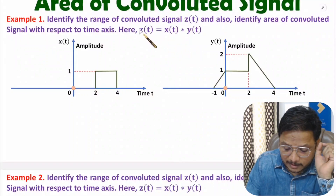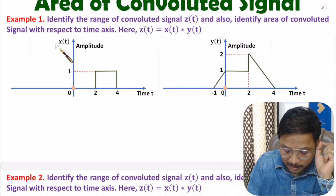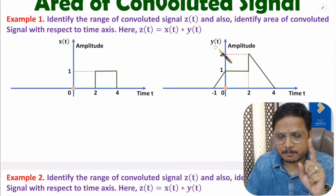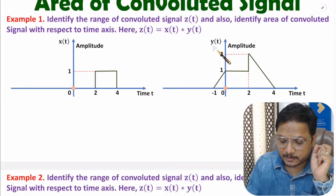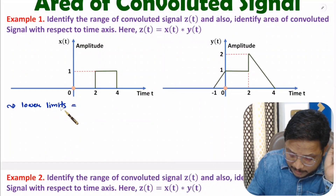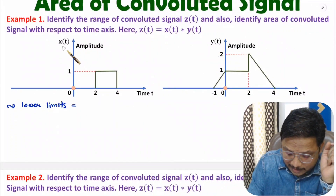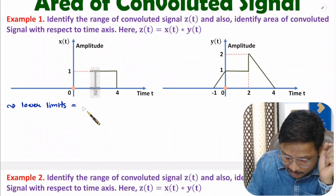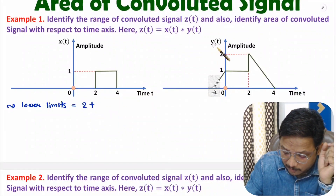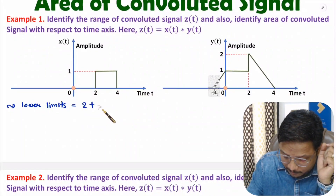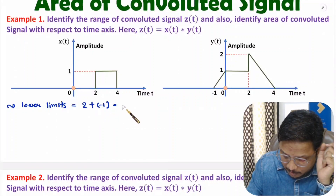The range of the convoluted signal is based on the range of X(t) and Y(t). For the lower limit: the lower limit of X(t) is 2, plus the lower limit of Y(t) which is minus 1. So the total lower limit is plus 1.